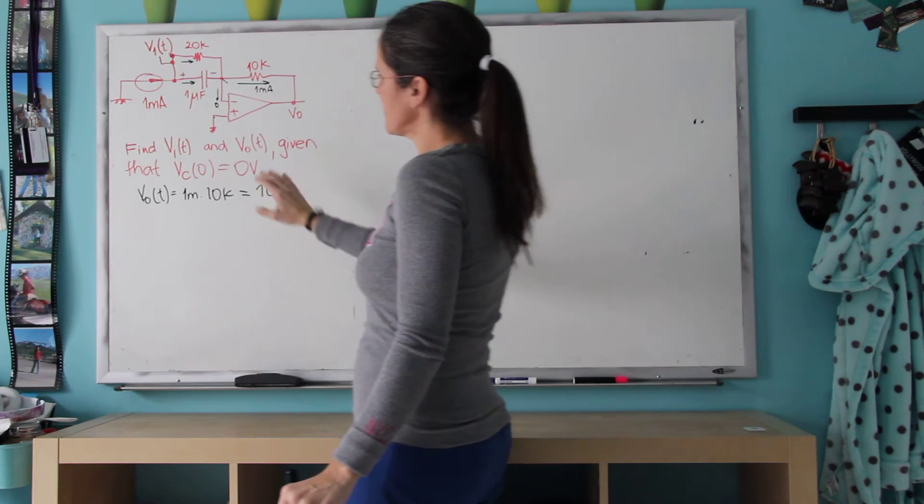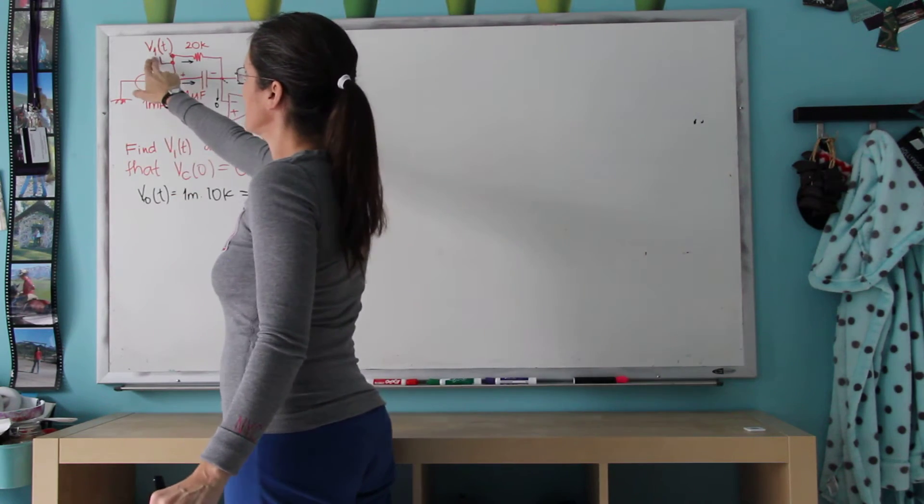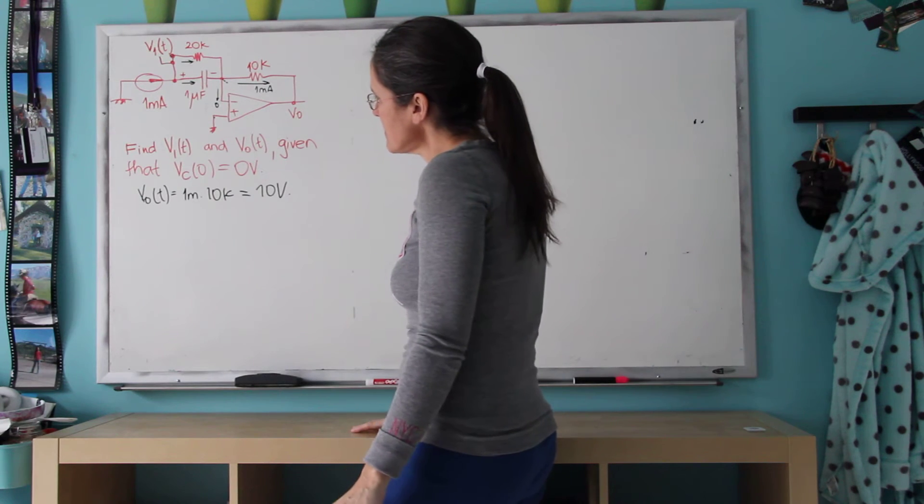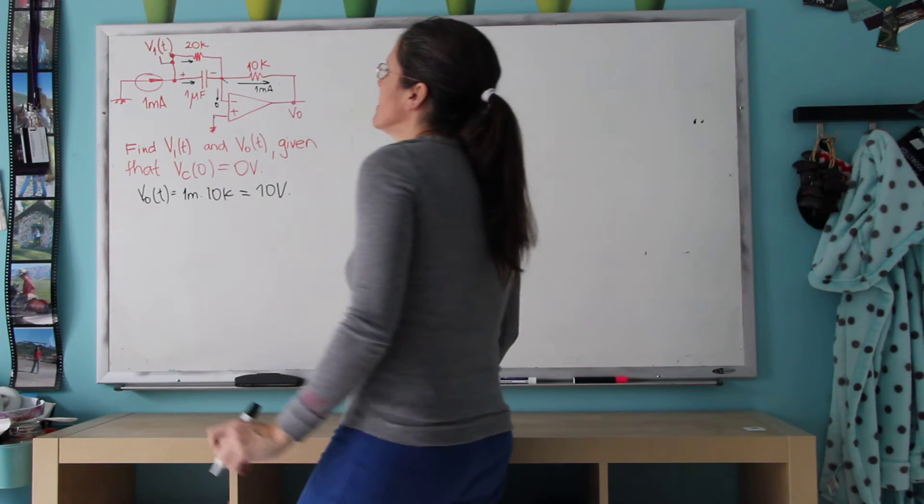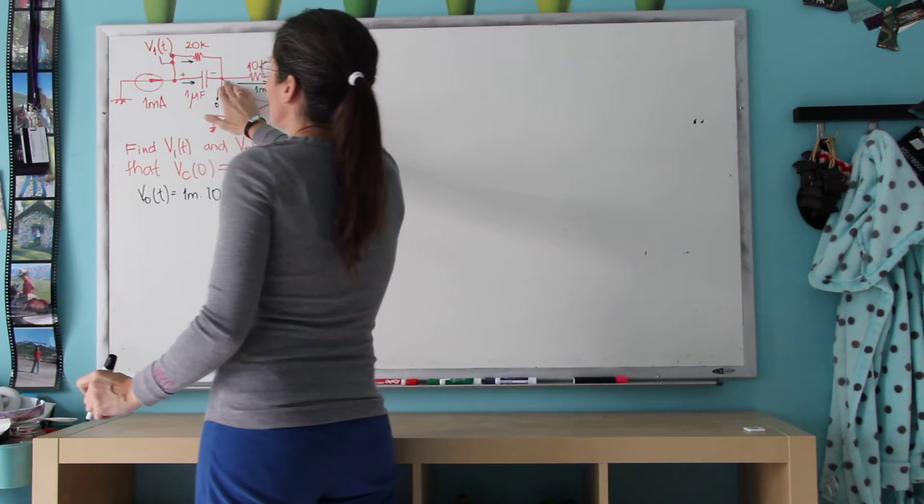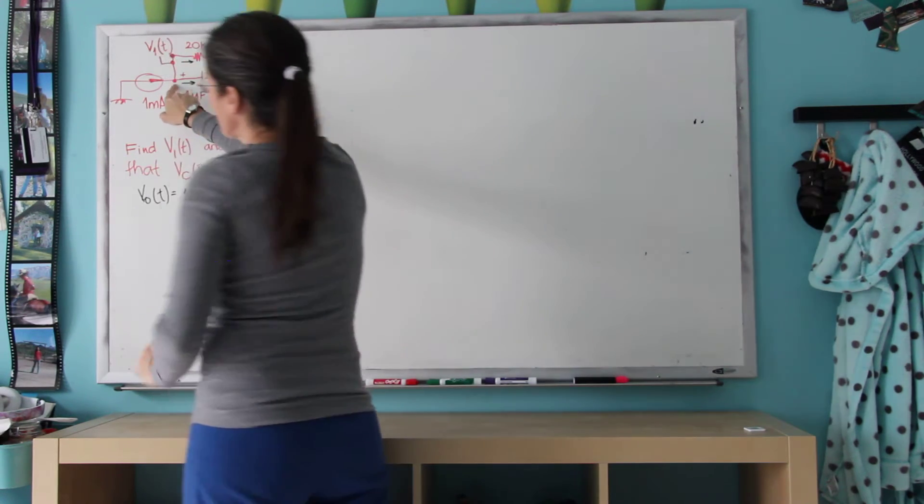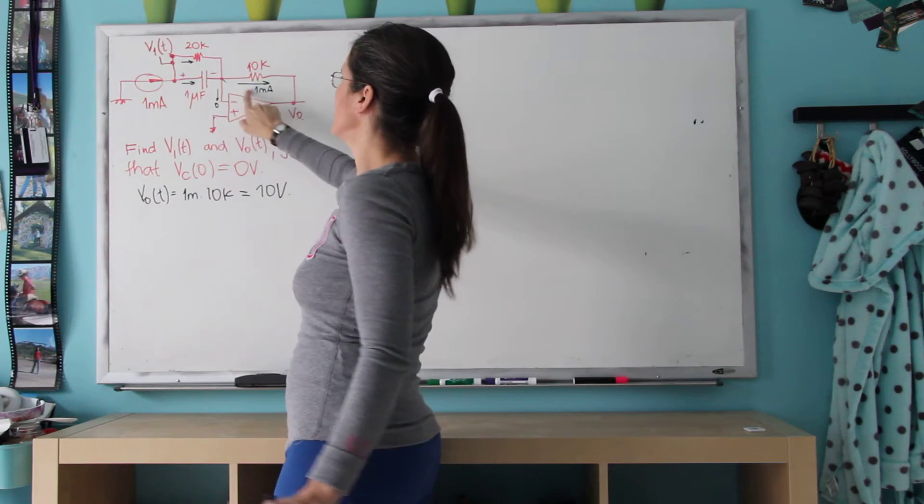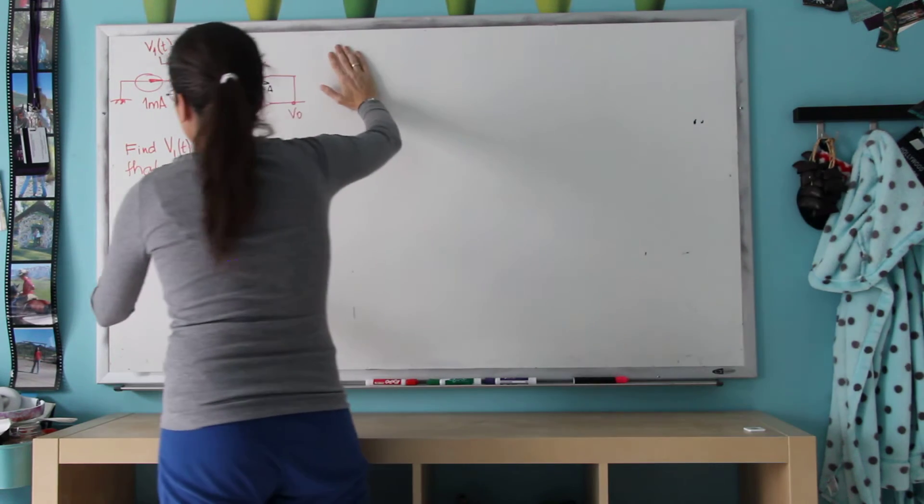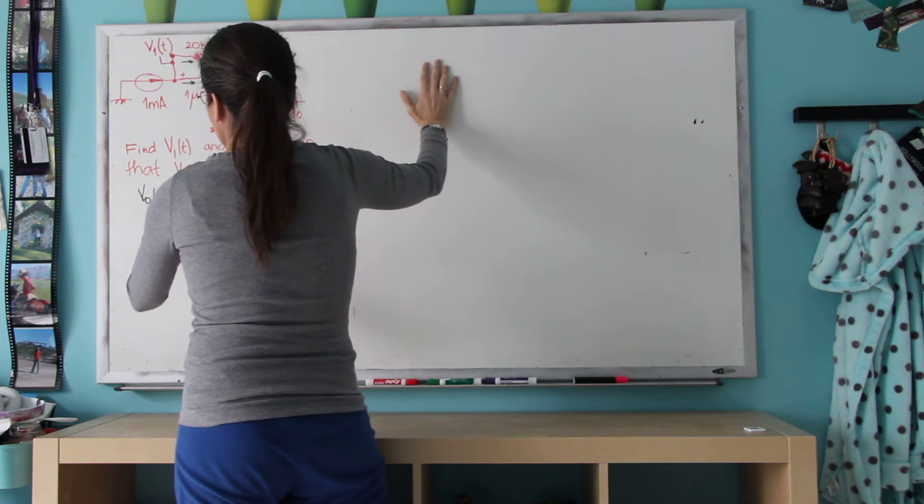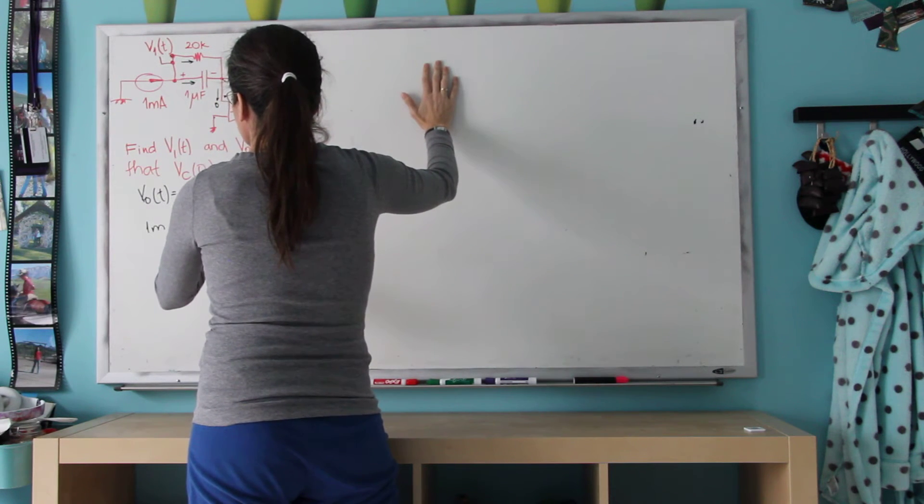And now the only other question is V1, which is the voltage across the capacitor. I'm going to find it with KCL, just like we've done all op amp circuits in the past. So I can do KCL here or here, it doesn't matter. This is 1 milliamp, so the 1 milliamp equals the current through the capacitor plus the current through the 20k.